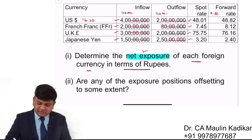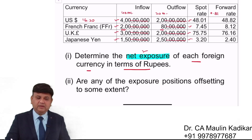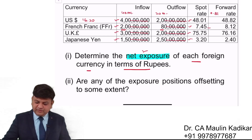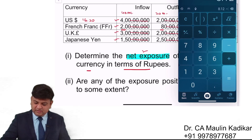For French francs, we have got 20 million inflow and 8 million payment. Net we have got 12 million, and this French franc currency is appreciated.